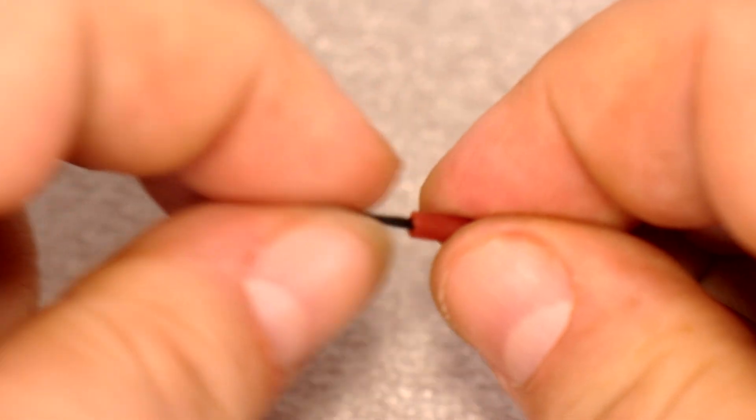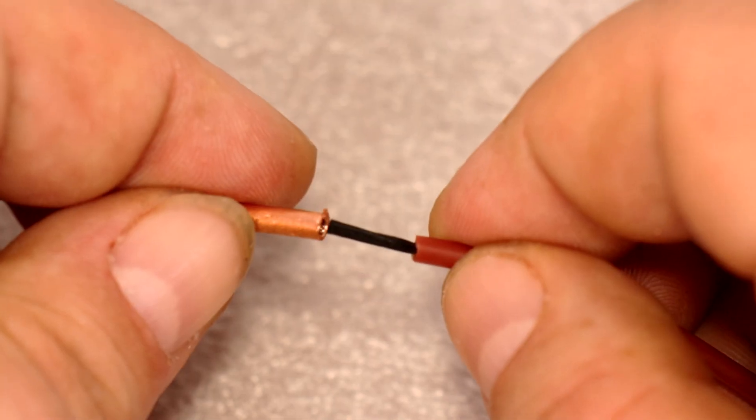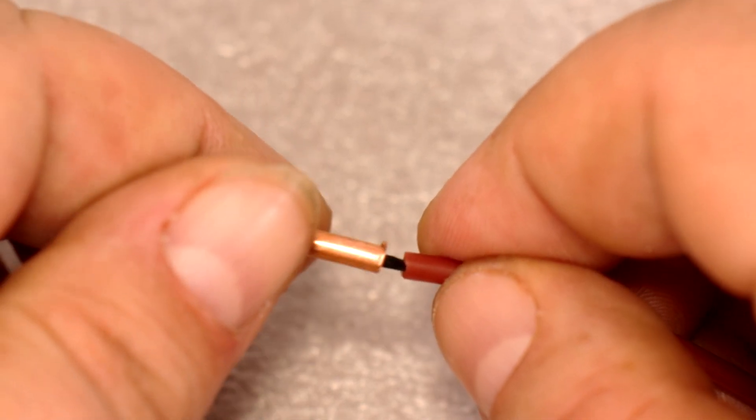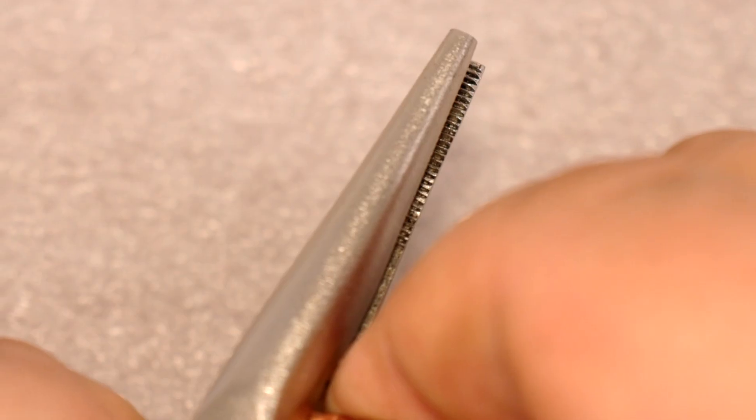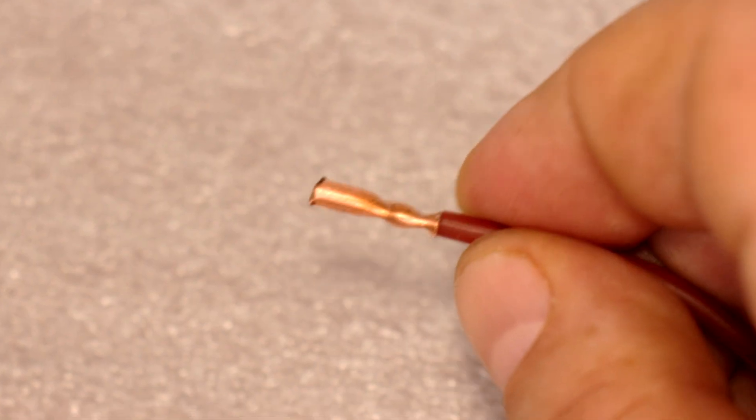I found the best and easiest way to attach it. Just put a piece of copper tubing on the wire and squeeze it with pliers. All you have to do is solder the wire to the copper tubing.